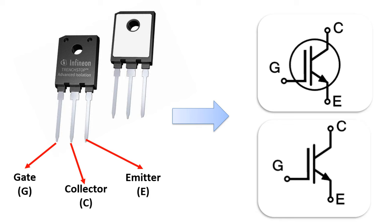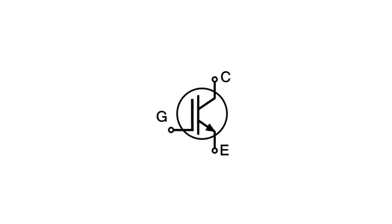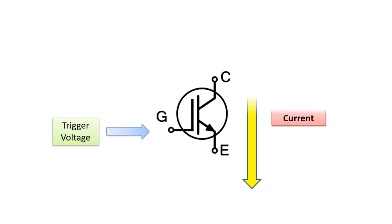As can be understood from the pin names, the IGBT shows both MOSFET and BJT transistor features. The gate pin is found in the MOSFET, while the collector and emitter pins are found in the BJT transistor. The working logic is similar to that of a MOSFET — with the trigger voltage applied to the gate pin, a large current between the collector and emitter is controlled. In other words, current control is provided with voltage.